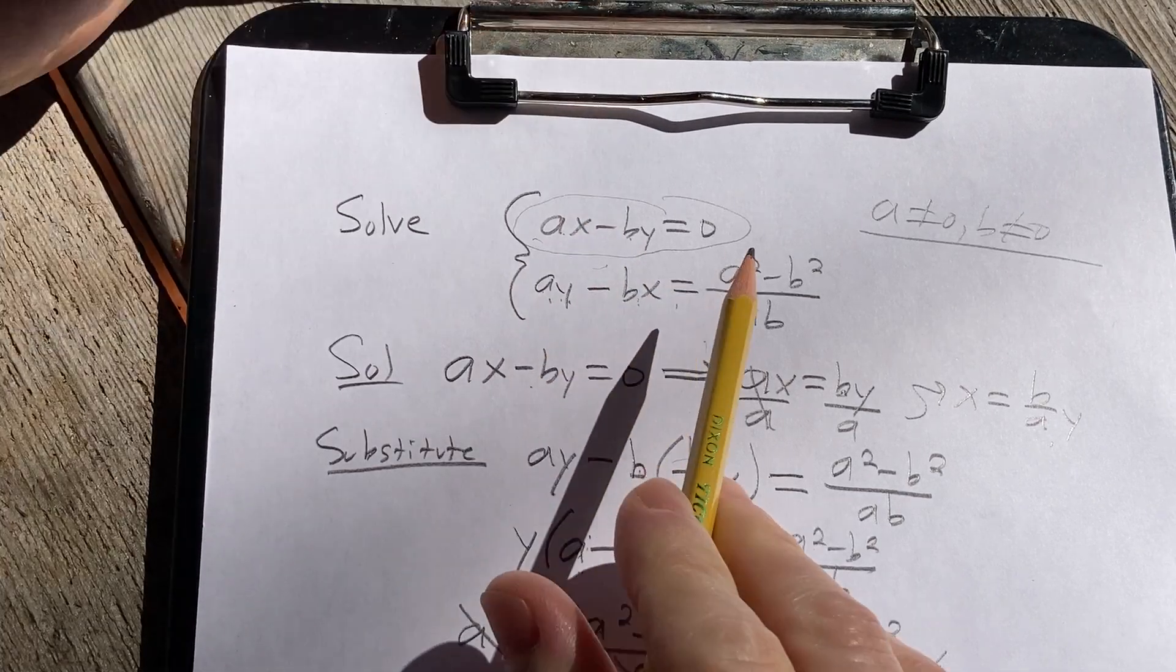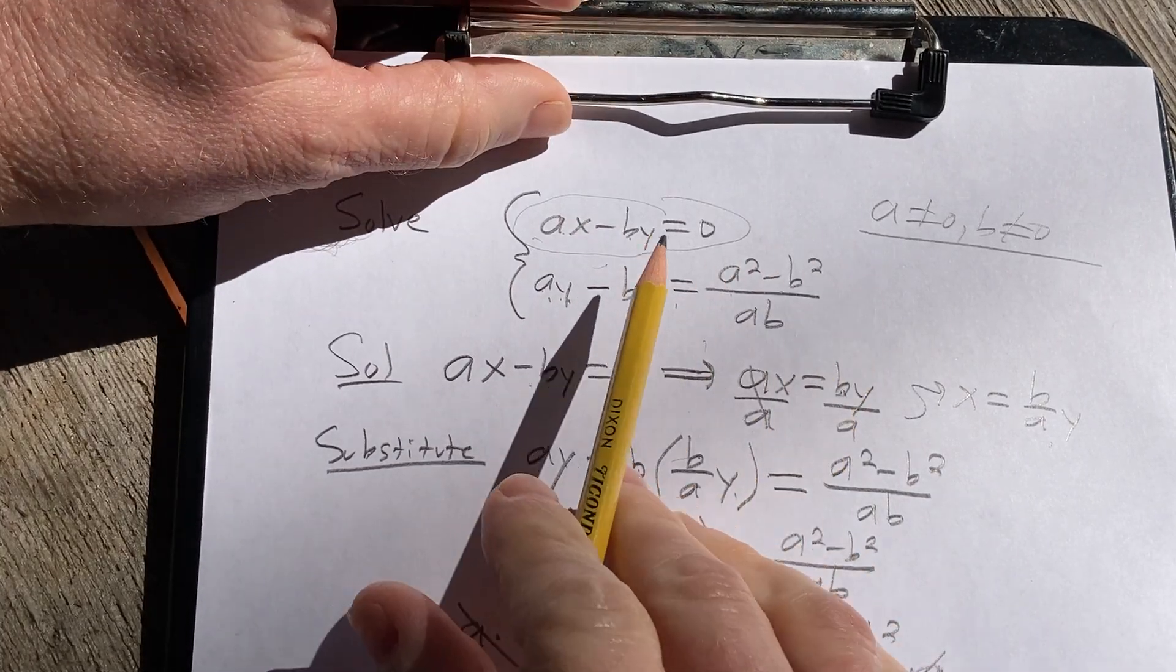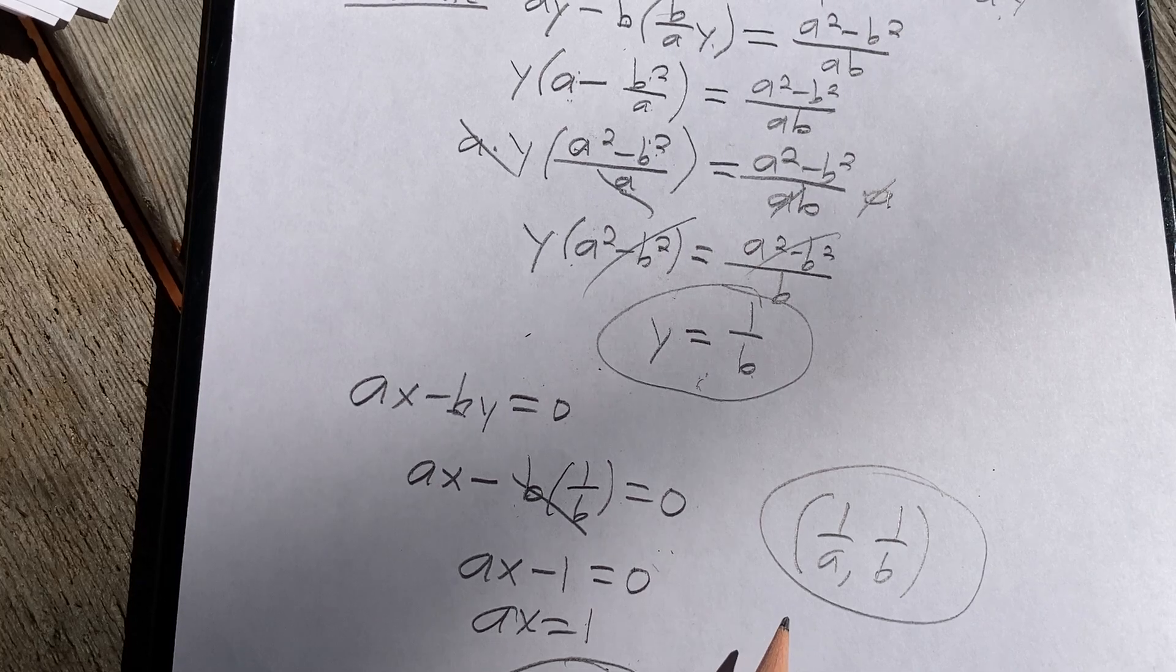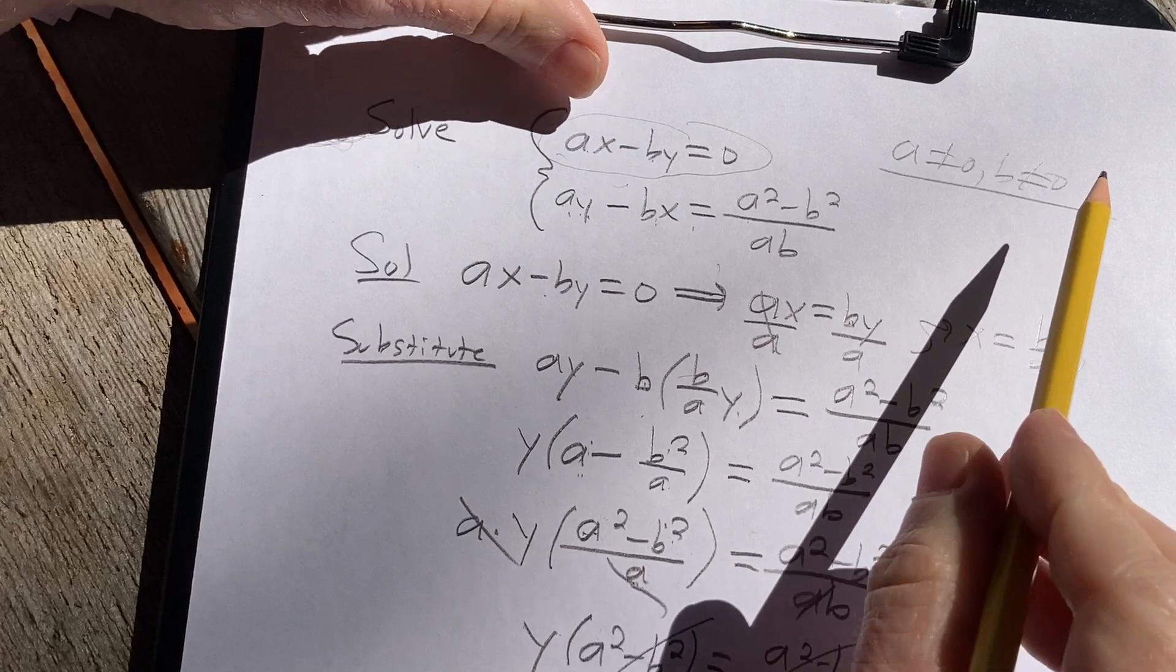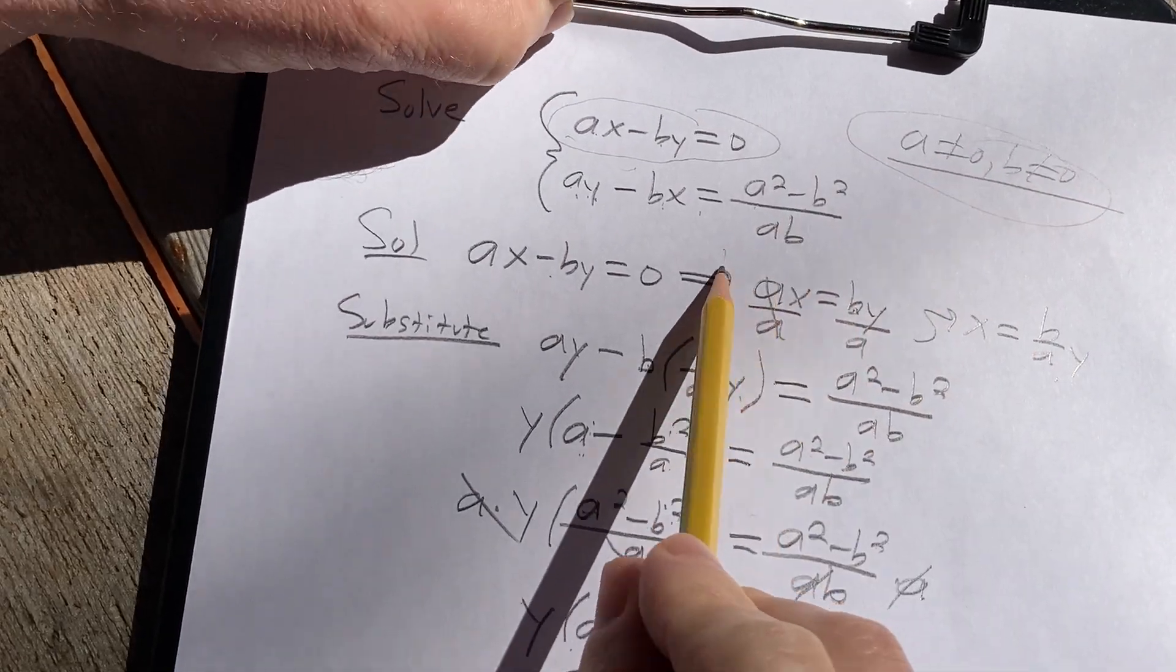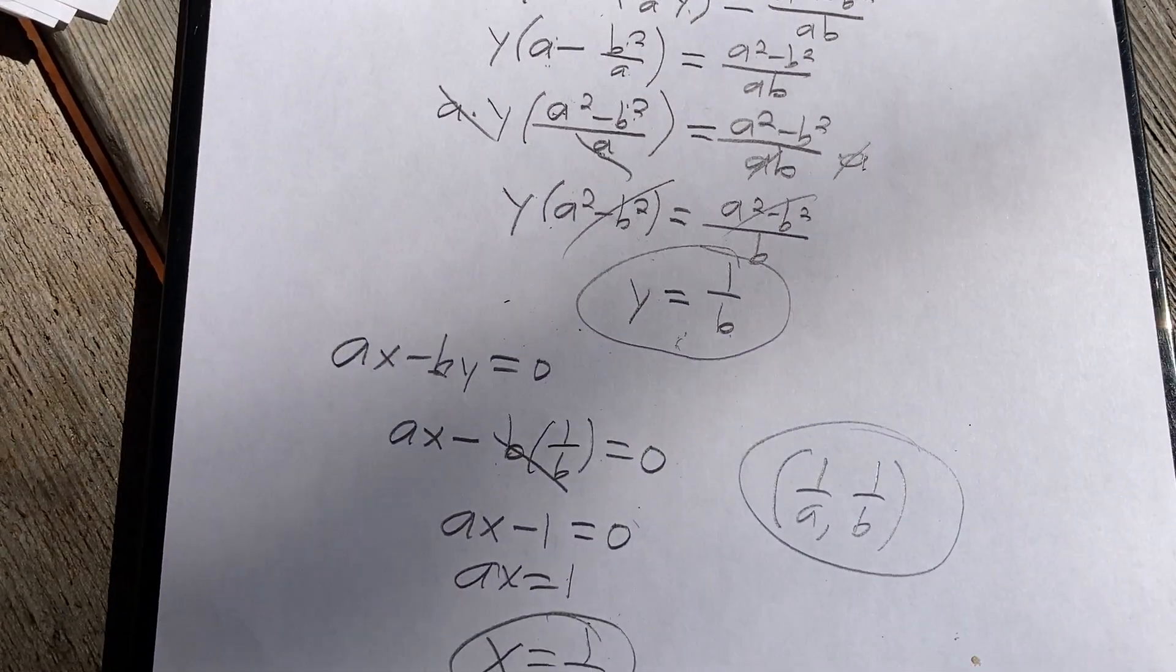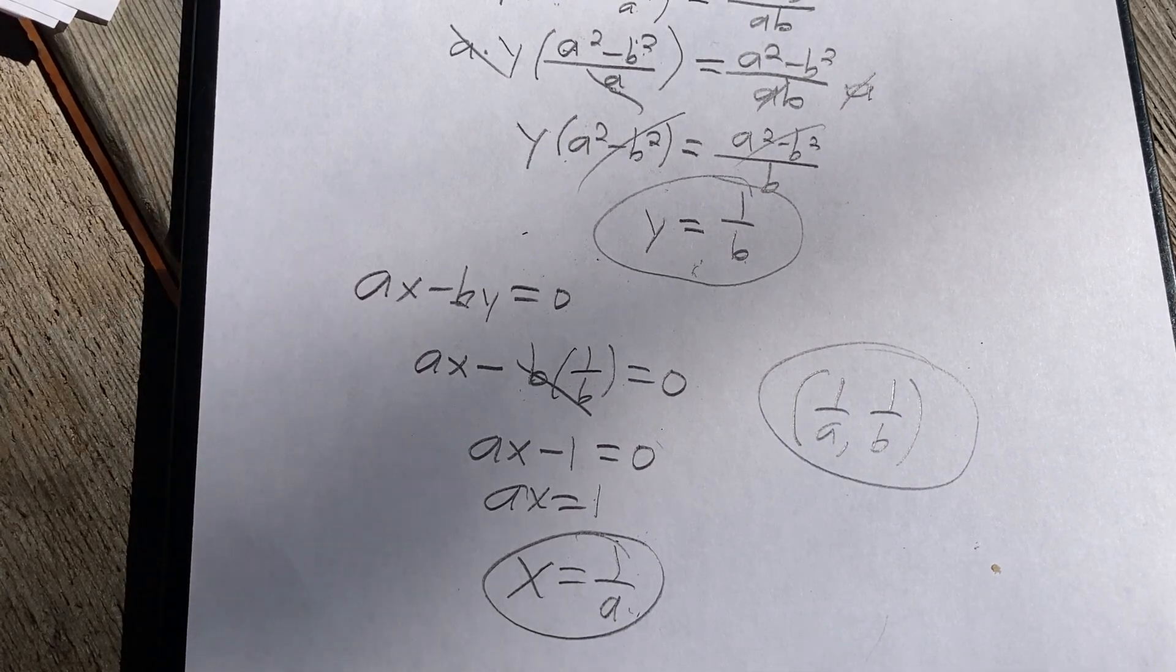of these two lines. These are both lines in the plane, and this is the point where they intersect: one over a, one over b. Obviously we don't know what the values of a and b are. All we do know is that they cannot be zero. Hopefully this has been helpful to someone out there who is studying mathematics. Good luck.